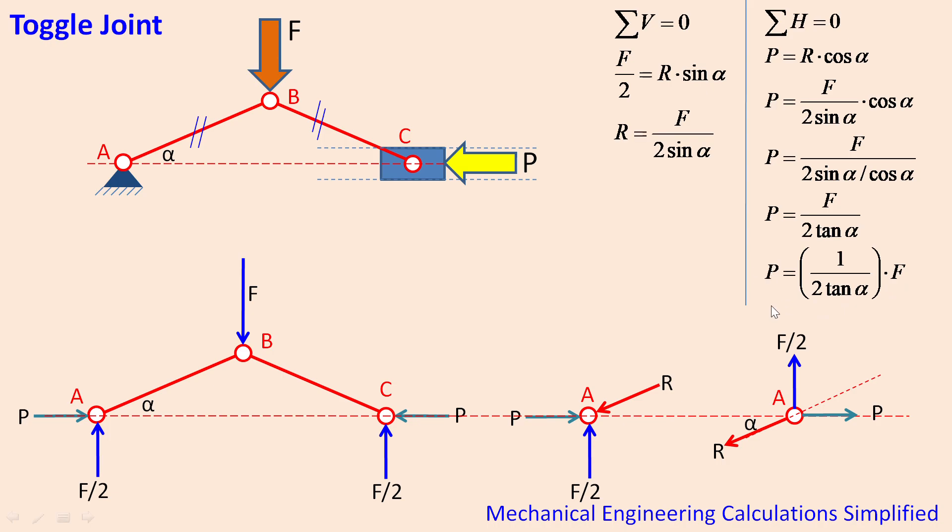Now we see here that F is the applied force and P is the output force, so this particular 1 divided by 2 tan alpha is the amplification factor, or in this case we are calling it as coefficient.